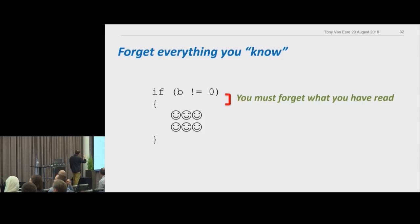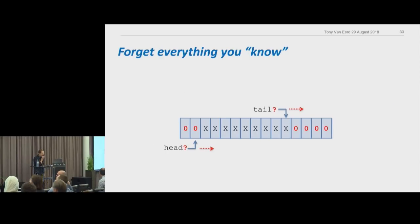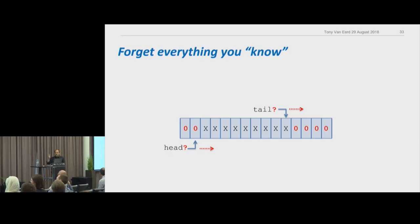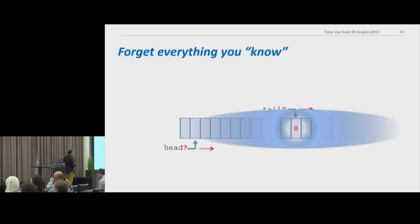You forget everything you know in the sense that if you just read a variable, you think you know its value — you don't. This is a lock-free queue I won't really talk about much today, but every bug comes from thinking you know what the state of the world is. When you're reading this queue as a lock-free program, you can only look at one thing at a time. You don't know what the rest of the queue is. And even after you've looked at that one thing, it's not true anymore — everything changes behind your back.